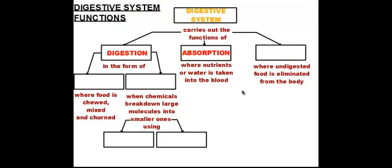Lastly, we have elimination. Since we're unable to digest everything that we put into our bodies, there is undigested food that's left over, and we have to get rid of that. Elimination is the process where undigested food is eliminated from the body.